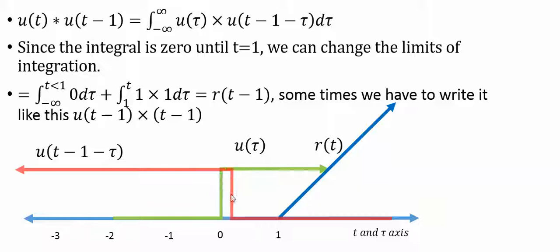And now it's really just 1 times 1 and we're just integrating the area under that curve, which if this is increasing linear in time, the area of that rectangle is increasing linear in time and you get r(t) delayed by 1.